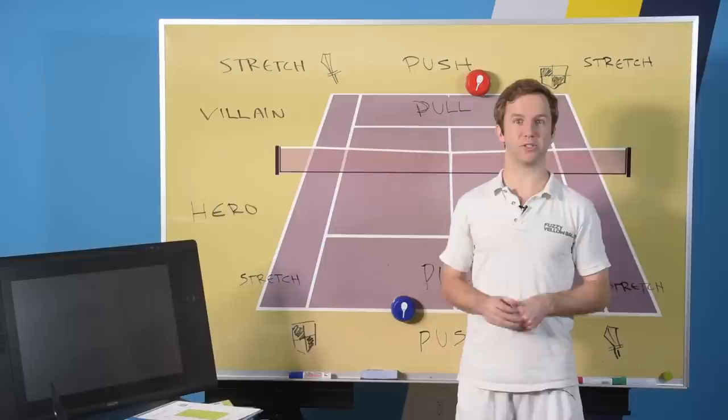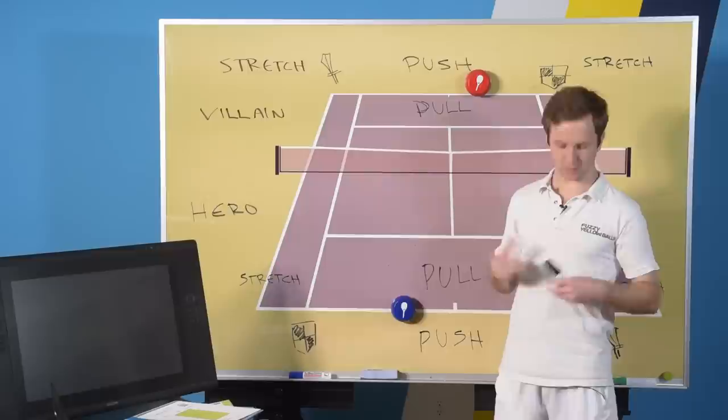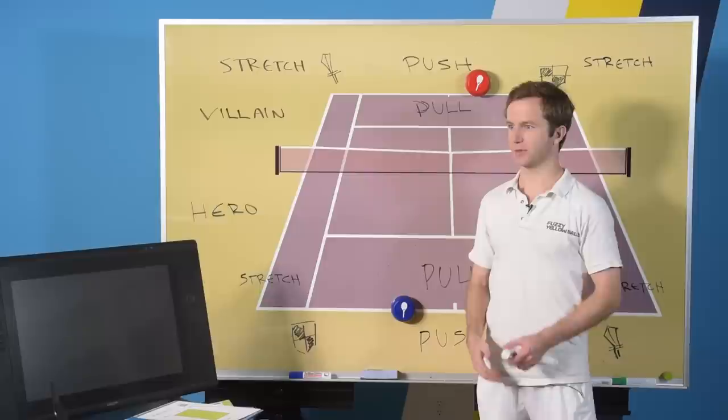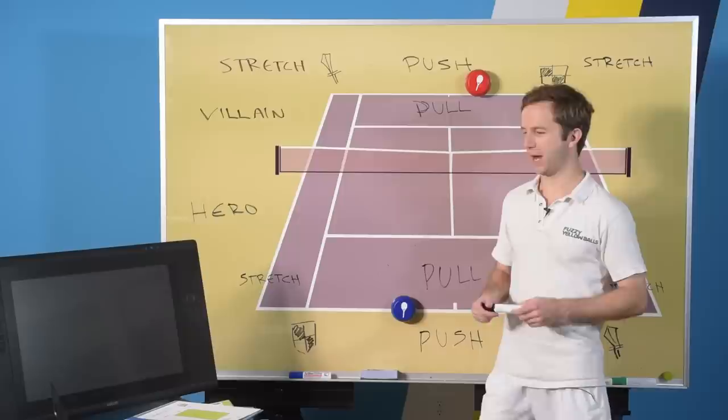What's up folks, Will Hamilton here, got my Wimbledon whites on about to go hit a tennis ball. I thought everybody on the ESPN set is dressed in all white so I might as well emulate that. This is actually an old-school fuzzy yellow balls t-shirt. This shirt must be like eight years old or something like that, it's from back in the day, the origins of FYB.